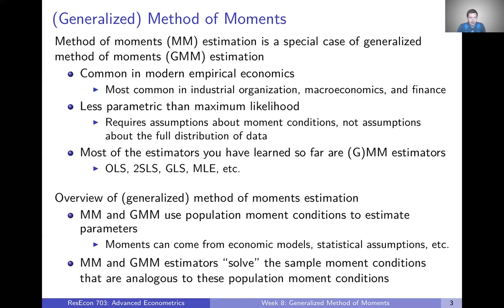The basic idea behind method of moments or GMM is to use population moment conditions to estimate parameters. We get some moment conditions from statistical assumptions, economic models, or something like that. These are conditions that we expect to hold in the population. Then we just solve for the parameters that make those conditions hold in our data. I think that'll make a lot more sense as we look at some examples and get into the formal definition over the next few slides and videos.